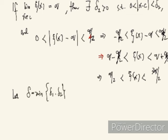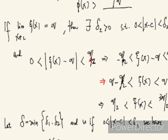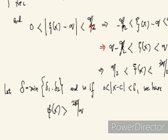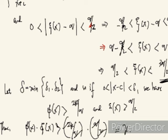Let delta be the minimum of delta₁ and delta₂. So if 0 < |x − c| < delta, we have φ(x) > 2k/ν and ψ(x) > ν/2. Therefore, φ(x)·ψ(x) > (2k/ν)·(ν/2), and the ν's cancel, leaving us with k. So φ(x)·ψ(x) > k. Therefore, the result is positive infinity.